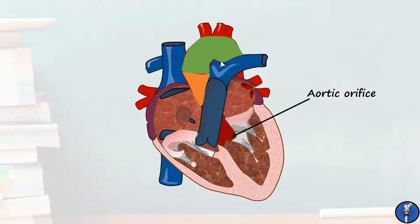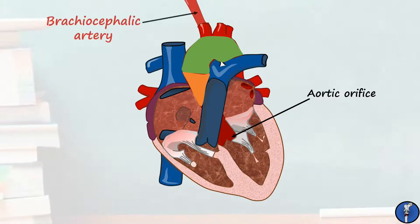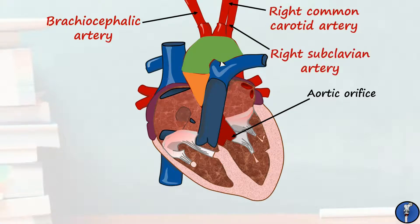The arch of the aorta curves leftwards and slightly posteriorly through the superior mediastinum, producing three main branches as it does. The first is the brachiocephalic trunk, then the right common carotid artery, then the right subclavian artery. These go on to supply the head and both of the upper limbs. Lastly, the aorta begins its descent into the lower parts of the body and travels posteriorly to the heart, now known as the descending thoracic aorta.